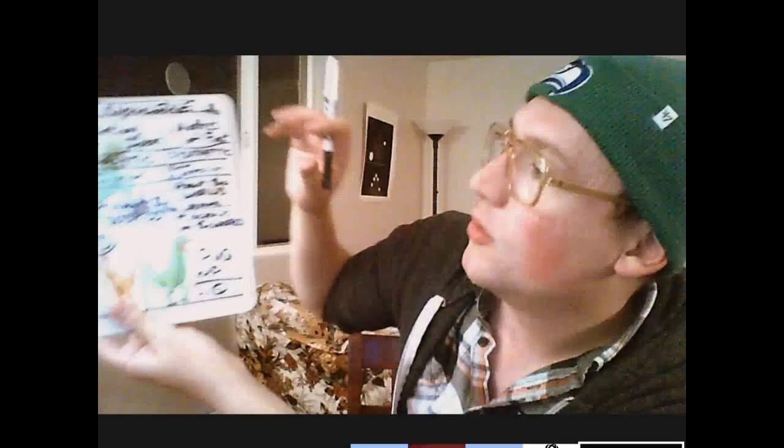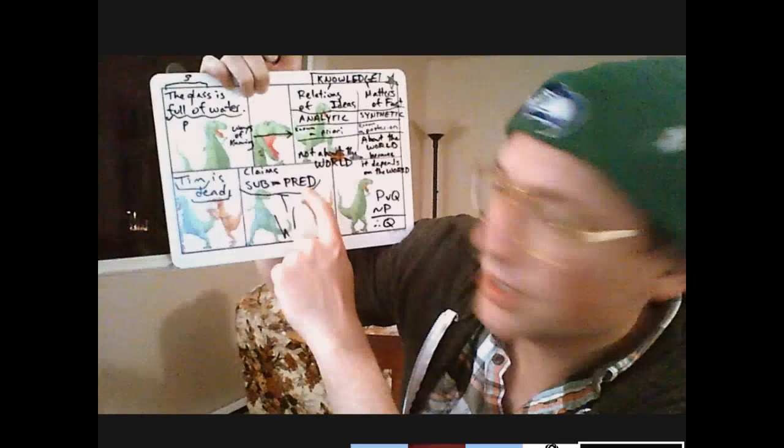Matters of fact, because they are synthetic and the predicate is not already established by the subject, you can imagine the subject with or without the predicate. The contrary to any matter of fact is still possible. Is it true that there is water in my glass? Yes. Is it possible that the glass does not have water in it? Yes — still possible even when it's false.